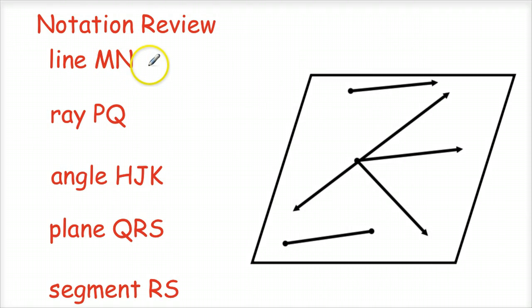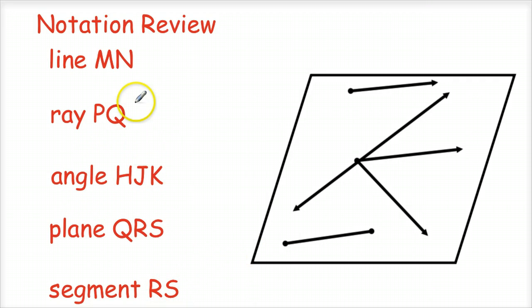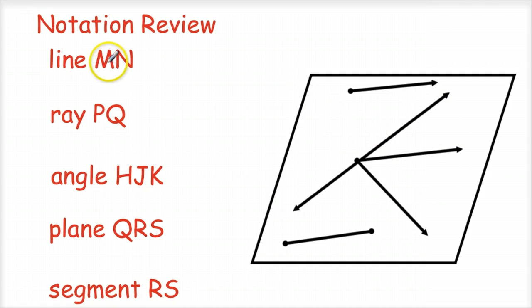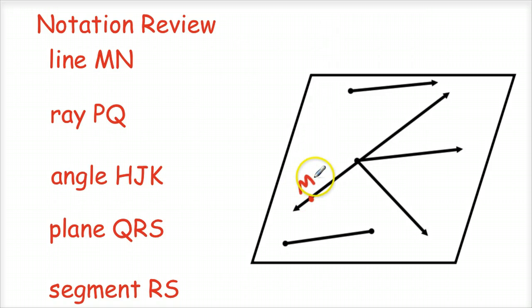We have a diagram here with a bunch of different items listed — line MN, ray PQ, angle HJK, plane QRS, and segment RS — and I want to draw them in and match them up with the picture. The first thing I'm looking at is line MN. The only line I see is this one right here, so I'll put point M and point N on that line. That's the only line because it's the only item with an arrow on each end.